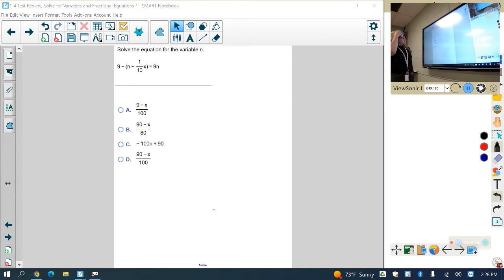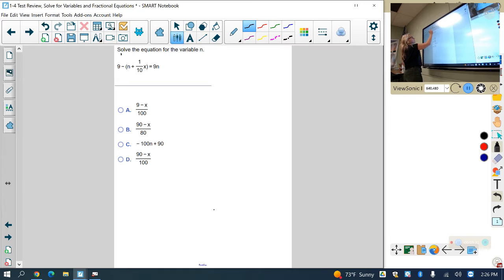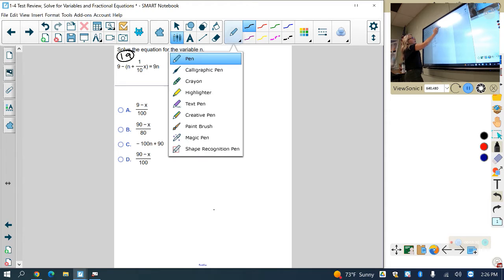Alright, finally, the last one that students were struggling with was number 19 on the Math Excel. We have to go ahead and solve this for n. And we have an n on both sides of the equation,